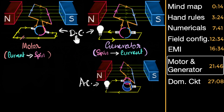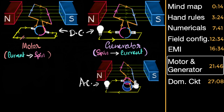Remember: for DC, you need commutators — something to keep reversing the contact — and for that you need split rings. But for an AC generator, you don't need any split rings or contact reversal, so use whole rings.